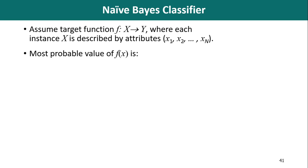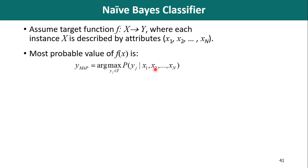Under the Bayesian approach, the most probable value of the function f is used, and this value is denoted as ymap. Ymap is given as argmax over yj belonging to Y of the probability of yj given the instance with attributes x1, x2, up to xn. We would like to find out the probability of the given set of inputs for all possible values of the class variable yj.